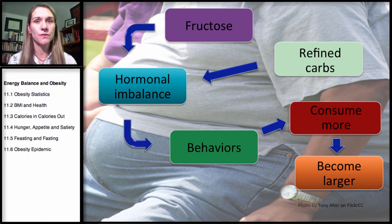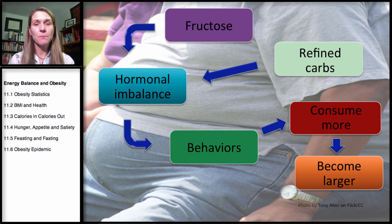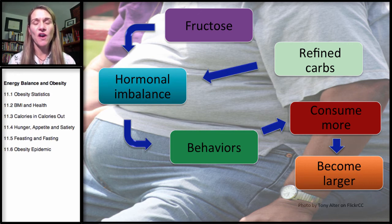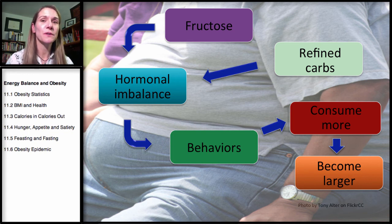The liver gets overloaded with high doses of fructose from processed foods with added sugar. It ends up making fat, storing fat, loading up with fat within the liver, and packaging and sending fat into the bloodstream. Other effects include increased uric acid and depletion of liver energy. Fructose also causes insulin resistance in the liver, contributing significantly to hormonal imbalance.